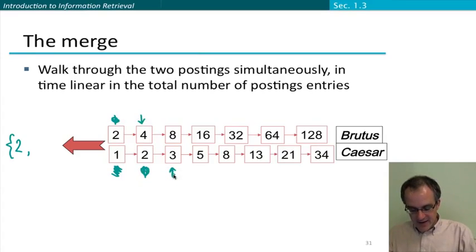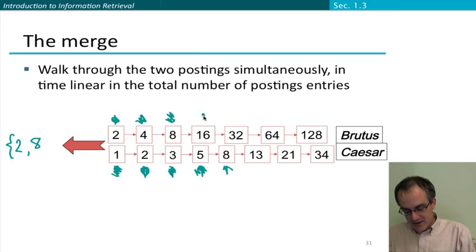We now say, are these pointers both pointing at the same doc ID? No. Is the thing pointed to by the first list pointer greater than the thing pointed to by the second list pointer? No. So we advance the bottom pointer one. Then we say, is the doc ID pointed at by the two pointers equal? No. And so again, we advance the smaller one. Equal, no, advance the smaller one. At this point, they're again both pointing at the same doc ID. So we add that to our result set and we advance both pointers.